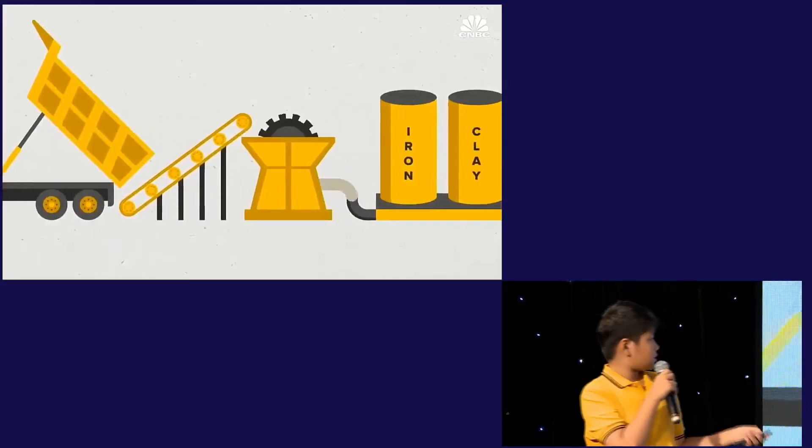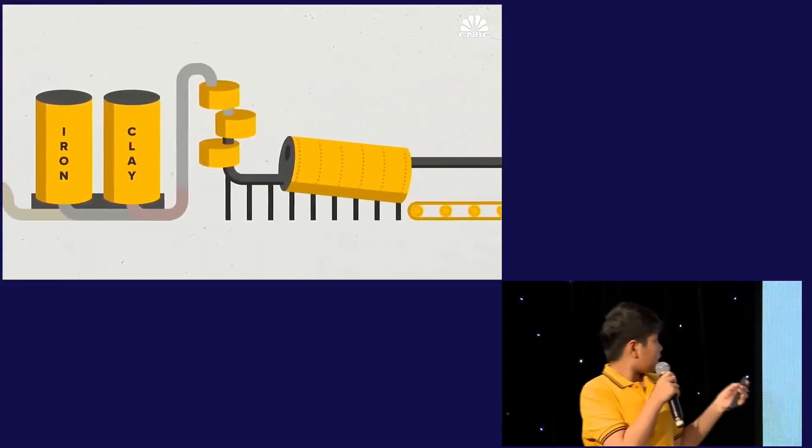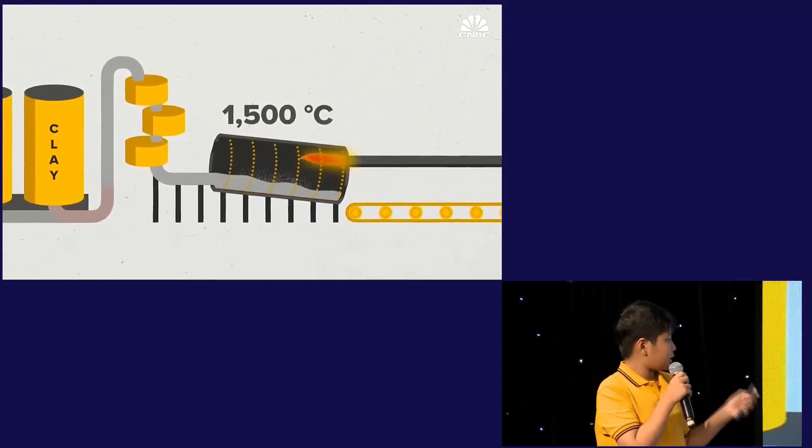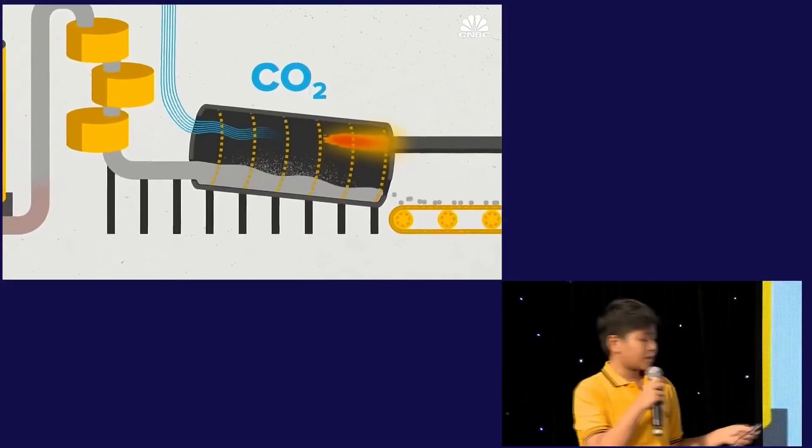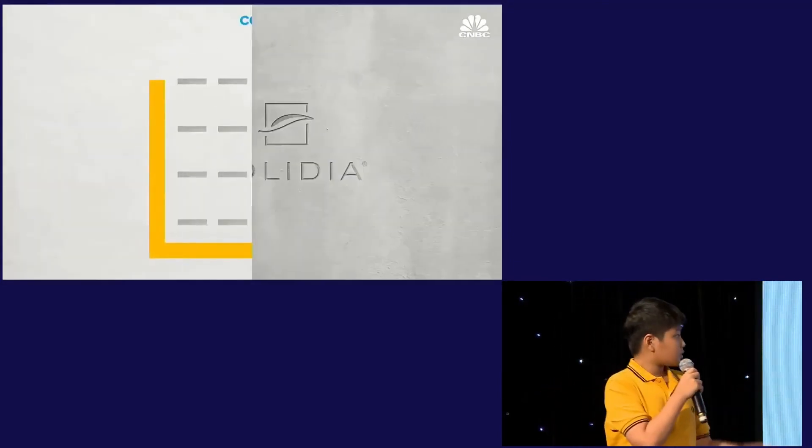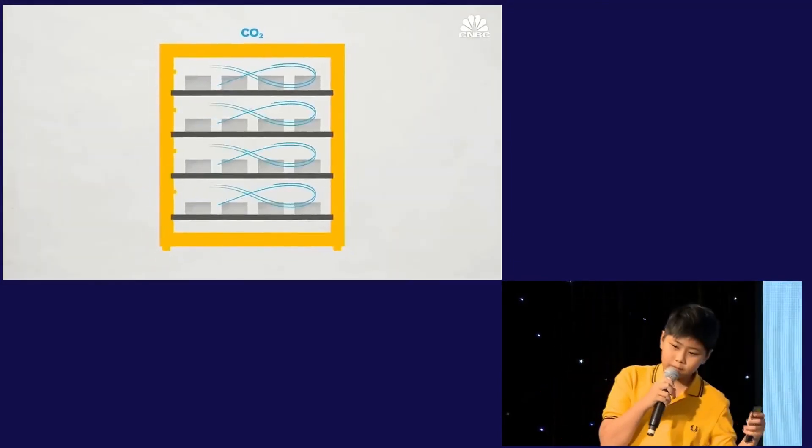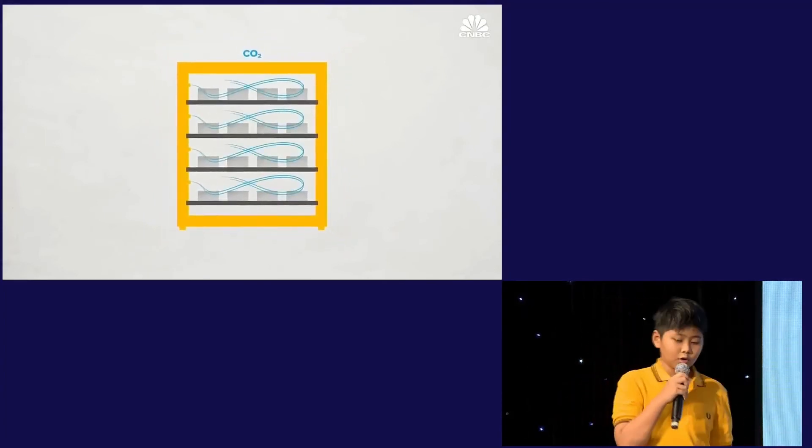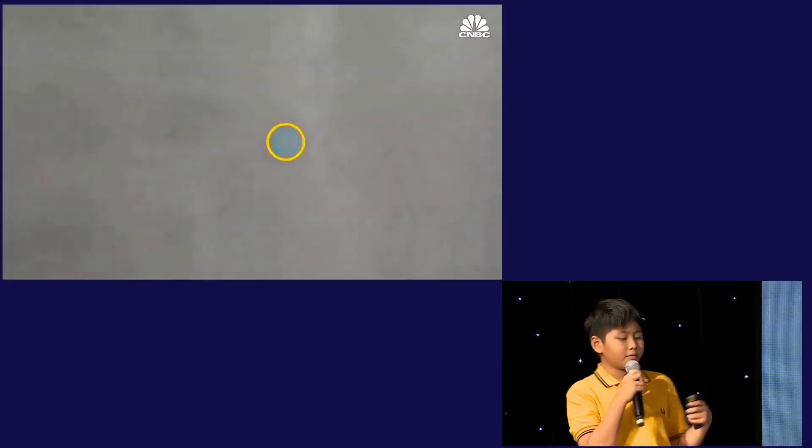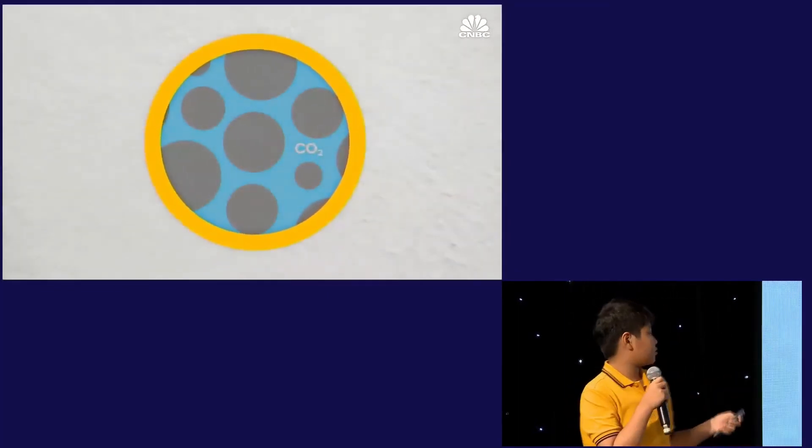Example, cement is by mixing limestone with iron and clay, and they melt it at a temperature of 1,500 degrees Celsius, which emits carbon dioxide. But the green cement, they put it in a drying chamber, which when it dries up, it traps carbon dioxide, making it even stronger and cheaper than the original cement.